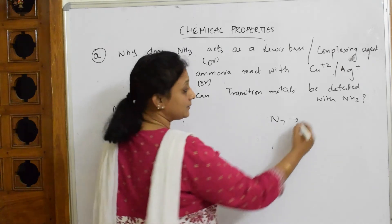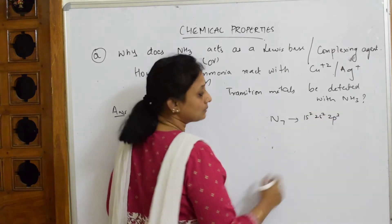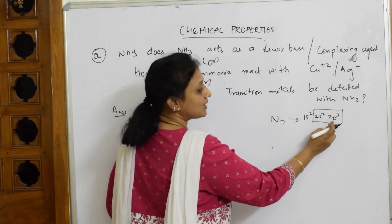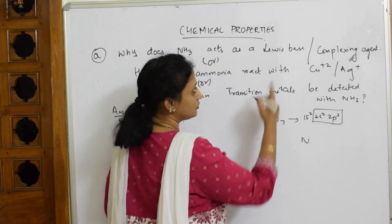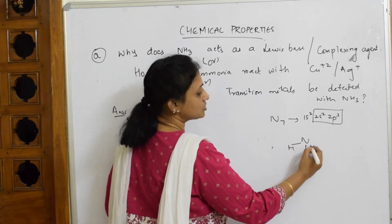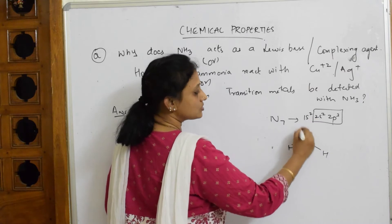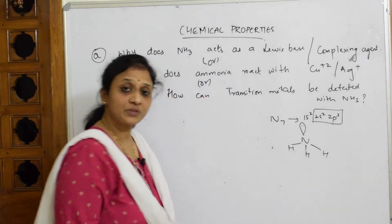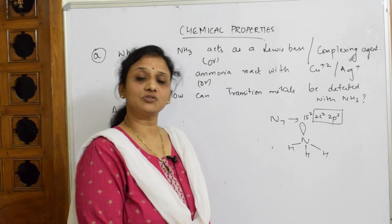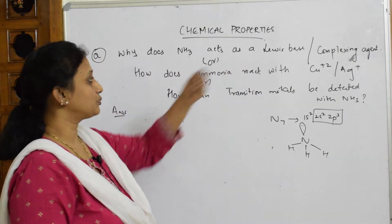Looking at the structure of ammonia: the configuration is 1s² 2s² 2p³. Nitrogen, with N=2 subshell, has 3 valence electrons which it shares with hydrogen, leaving 2 electrons as a lone pair. Because of this donation of a lone pair of electrons, ammonia is called a Lewis base.